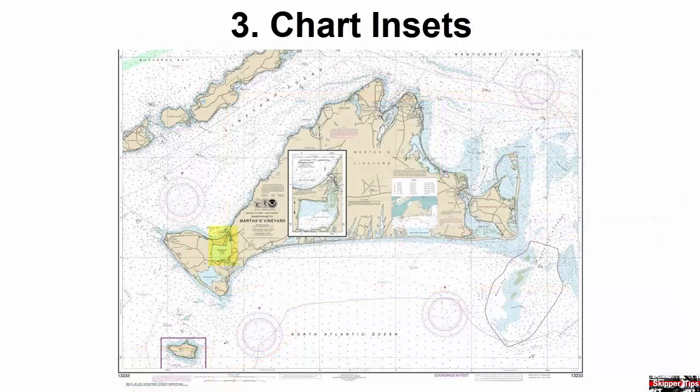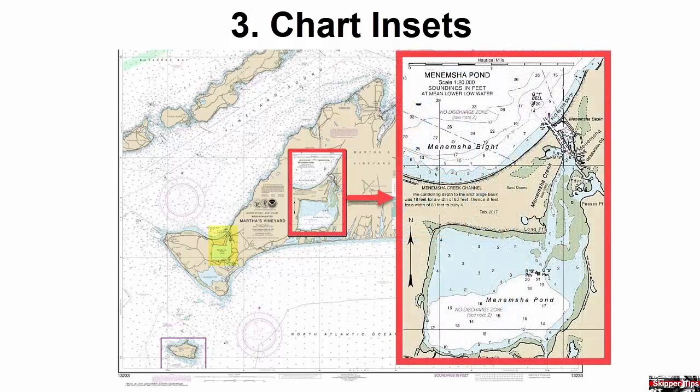Manipsha Pond on the western side of Martha's Vineyard will provide good protection when anchoring or mooring, but even on this 1 to 40,000 scale chart, safe entry would be quite dangerous without more detail. The cartographers have printed a 1 to 20,000 scale inset showing a dredged entrance channel to the anchor basin. The depths are 10 feet inside the channel to the 80-foot wide anchor basin, continuing to nun buoy number 4 in depths of 8 feet. Note the linear scale added to help you measure distances on the inset.